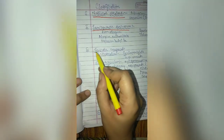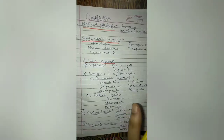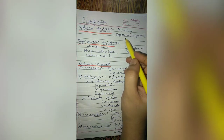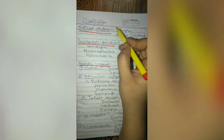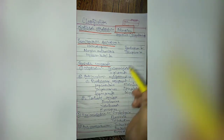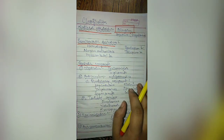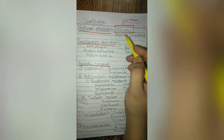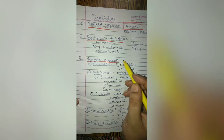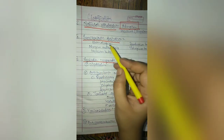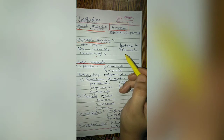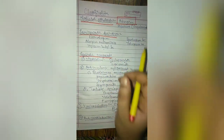Anticholinergic drugs are mainly classified into three types depending upon origin: natural alkaloids, semi-synthetic derivatives, and synthetic compounds. Natural alkaloids include atropine and hyoscine, also known as scopolamine. Semi-synthetic derivatives include homatropine, atropine methonitrate, hyoscine butyl bromide, ipratropium bromide, and tiotropium bromide.